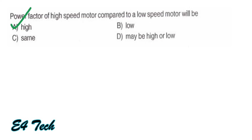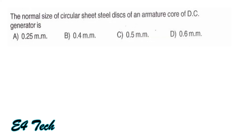The normal size of circular sheet steel disc of an armature core of a DC generator is 0.5mm in thickness. That is option C.